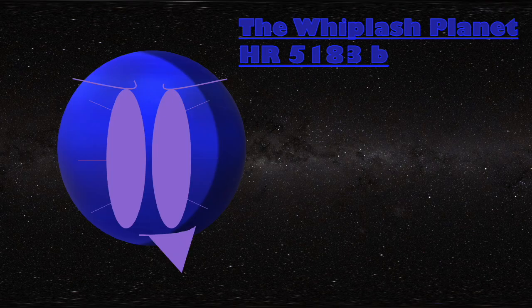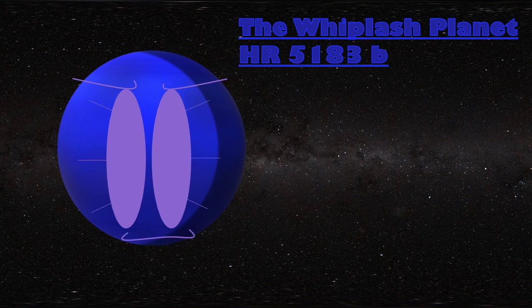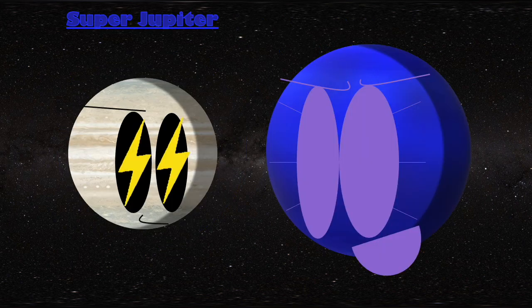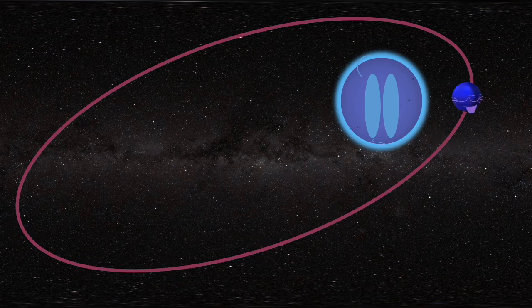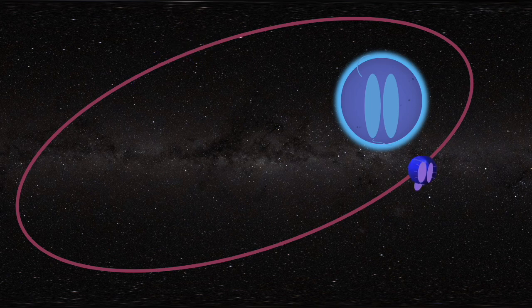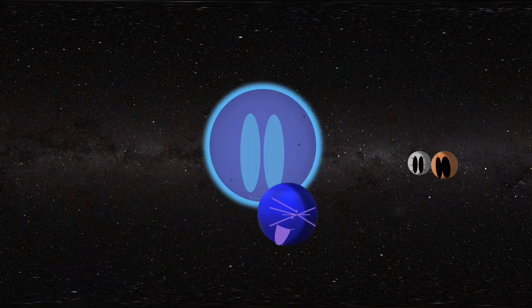They call me the Whiplash Planet, HR5183b, a super-jupiter three times the size of Jupiter. I have an eccentric 74-year orbit. I slingshot around my star, spinning up as I get closer and slowing down as I retreat. I'm a bit of a wrecking ball because I'd be deadly on any regular orbiting planets I meet.